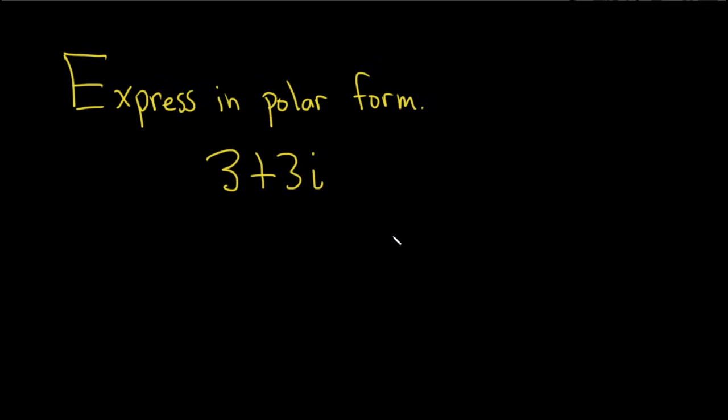In this problem we have a complex number and we're going to express it in what's called polar form. So basically we have to write it like this. This is equal to a number which we'll call r. This is called the modulus of the complex number. Times the cosine of theta. Theta is called the argument. Plus i sine theta.